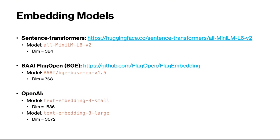BAAI general embedding or BGE, as well as the models from OpenAI. You can see that the dimensionality of these embedding vectors ranges from 384 to 3072. These vectors will be stored in the vector databases mentioned previously for fast search.